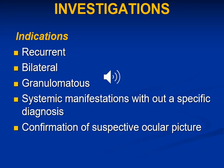What are the indications for investigation in uveitis? Number one, recurrent cases. Number two, bilaterality. Number three, granulomatous inflammation. Number four, systemic manifestations without a specific diagnosis. And lastly, confirmation of a suspected ocular picture.